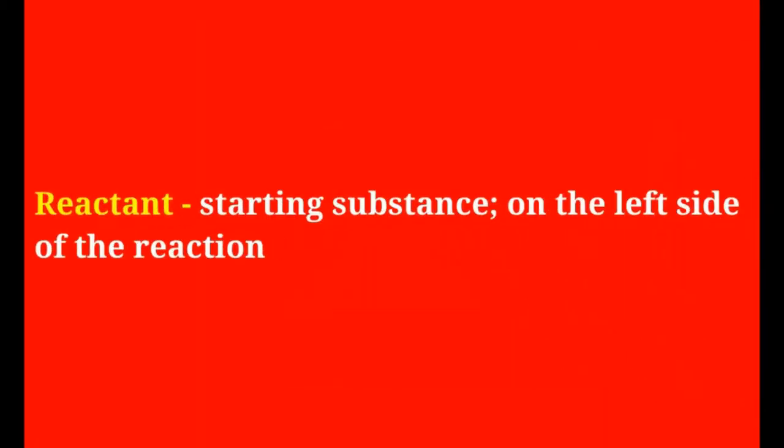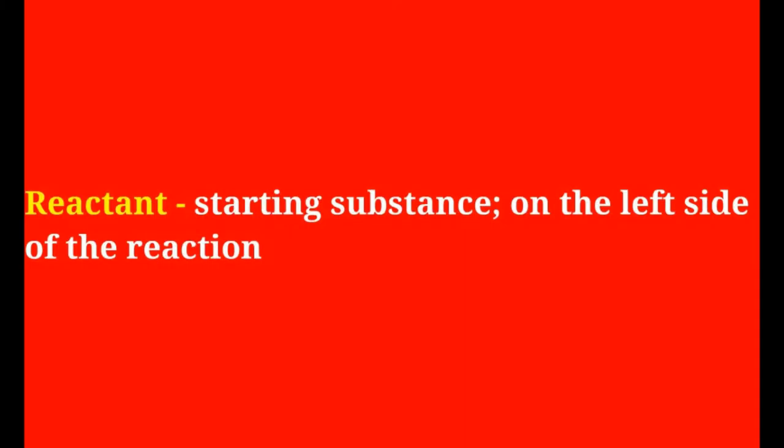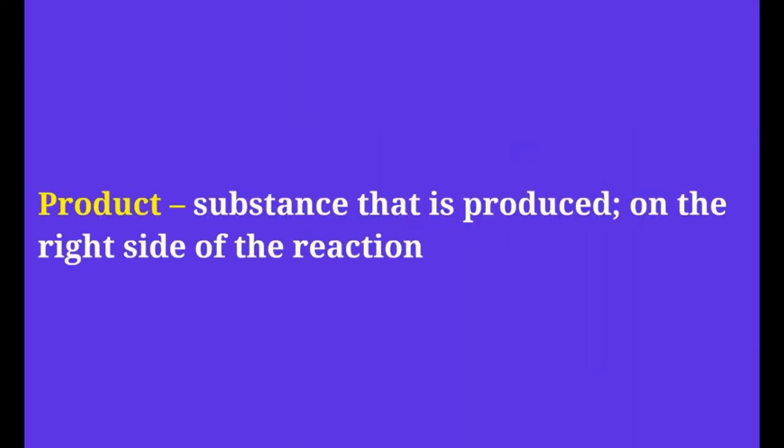What is a reactant? It's the starting substance. It's always going to be on the left side of a reaction. The products are on the right side, and the arrow will always point toward the product on the right side. We read from left to right, so reactants are on the left and products are on the right.